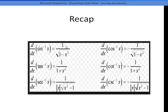Let's take note. Sin inverse x is 1 over square root of 1 minus x square. Tan inverse x is 1 over 1 plus x square. Secant inverse x is 1 over mod of x square root of x square minus 1. See you in the next video.